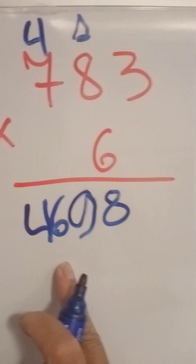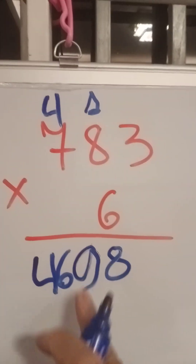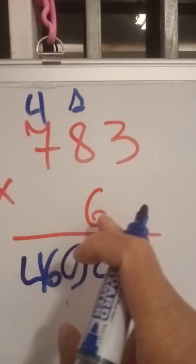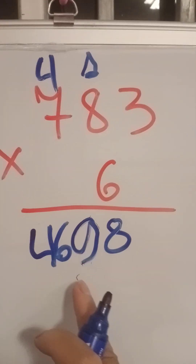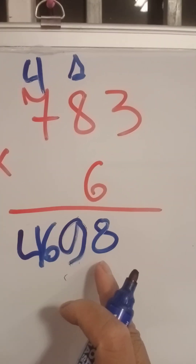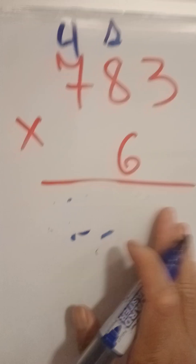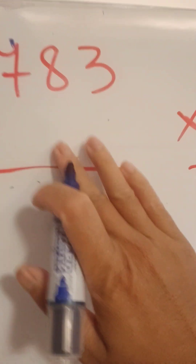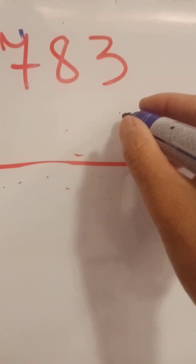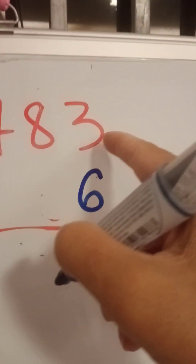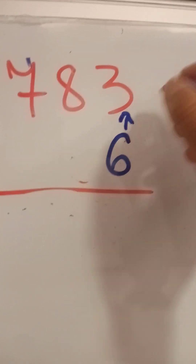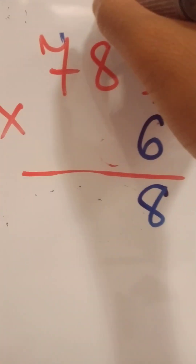Now this next answer: 783 multiplied with six, the answer is 4698. So we can do it together. Let's write it right here.